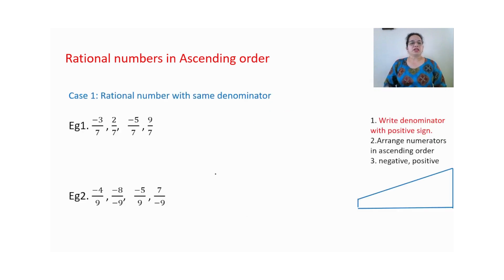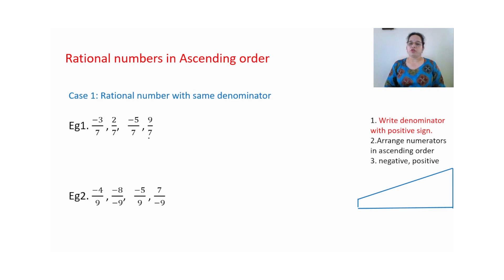Now the next slide is Case 1. Given the rational numbers with the same denominators, you can see the rational numbers — we arrange the numerators in ascending order if the question asks for ascending order.